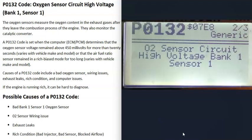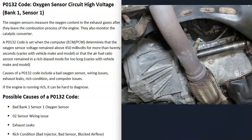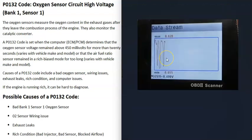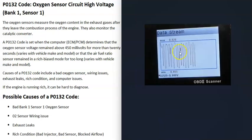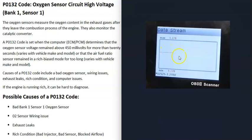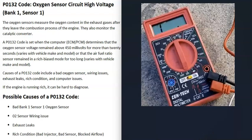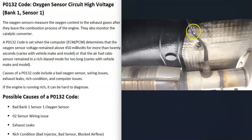The first possible cause is that the bank one sensor one O2 sensor has simply failed and just needs to be replaced. You can use a multimeter to test it, or you can use an OBD2 scan tool with a graph function, which is very handy for troubleshooting. You want to see the voltage going up and down in a steady pattern — that would indicate a good working sensor. If the voltage is stuck high or looks abnormal, you know there's an issue. There are good YouTube videos on both testing methods.